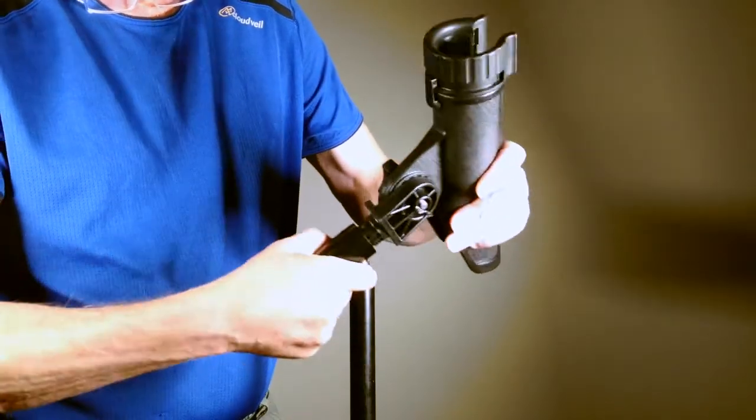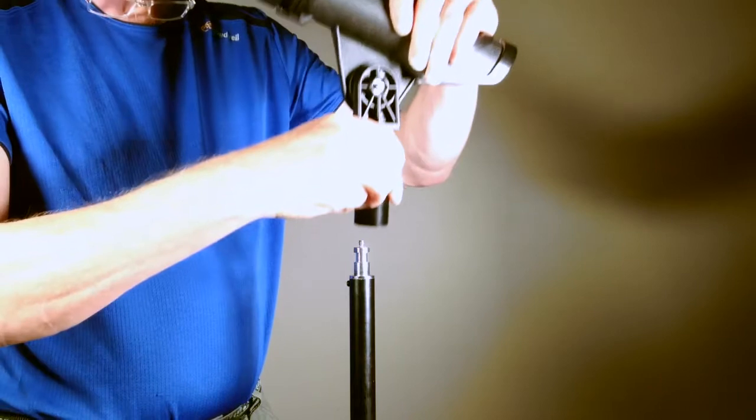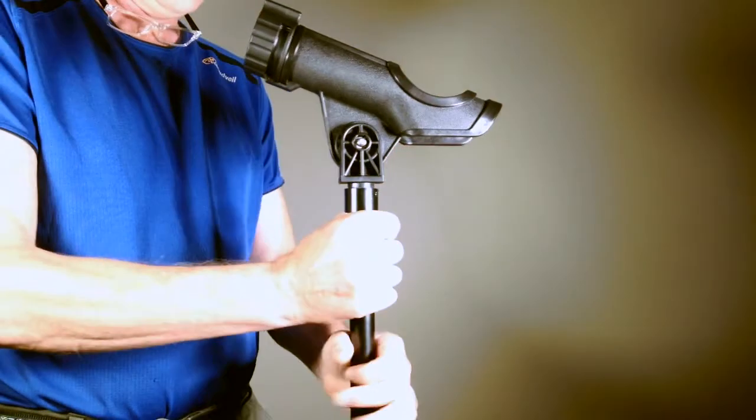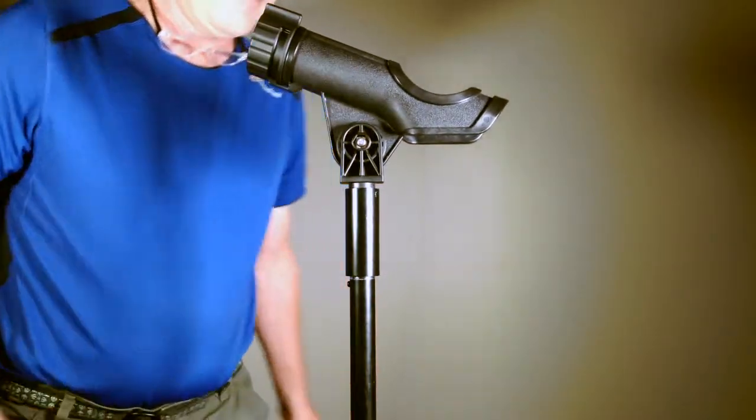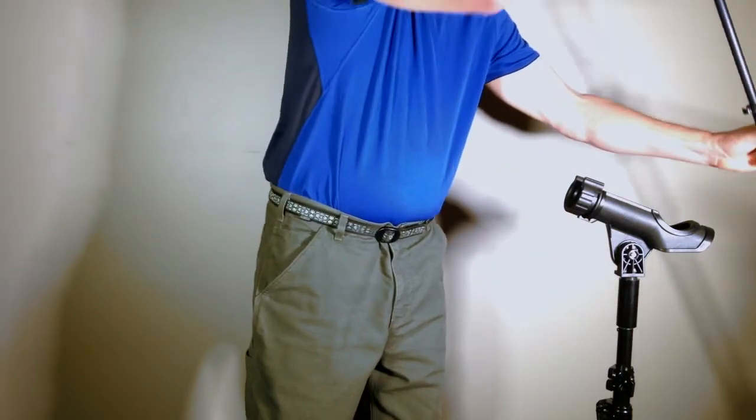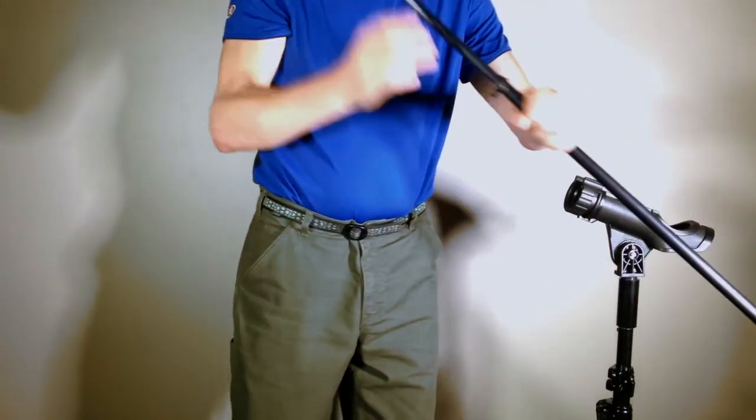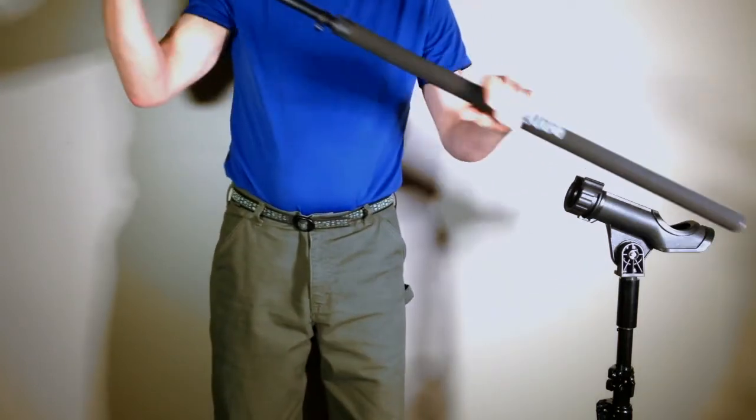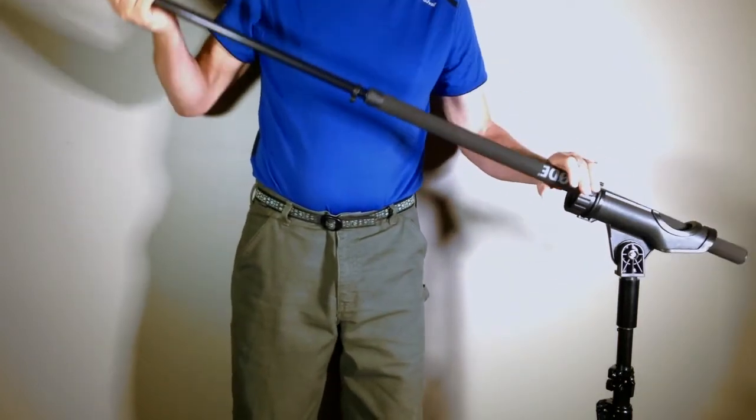The pole holder itself is extremely durable as it's made from reinforced nylon. It is adjustable in 22.5 degree increments. It's designed for holding extremely large and heavy fishing poles, so I think my lightweight boom pole and Rode VideoMic will work quite well with it.